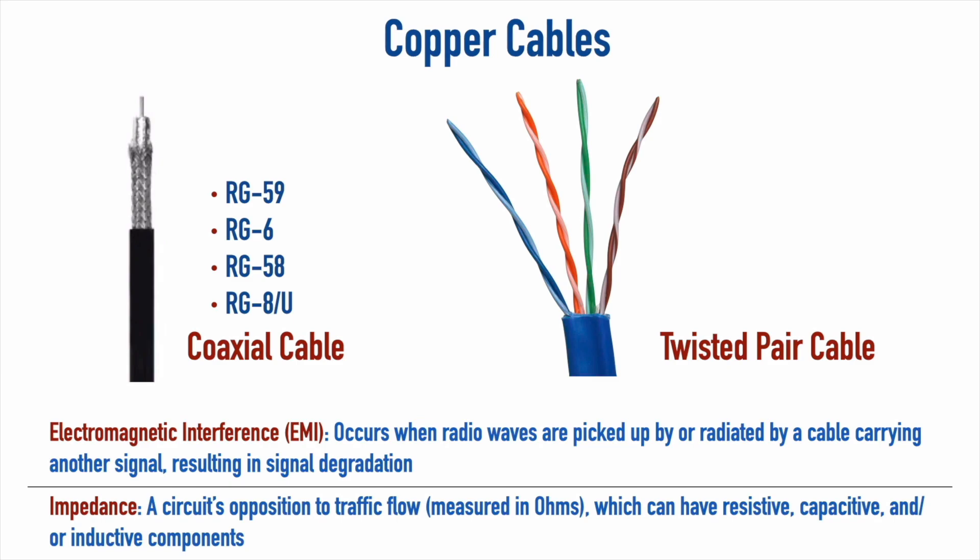Outside of data centers, we're typically going to see twisted pair cabling used in networks with distances less than 100 meters. You might wonder how we're protecting ourselves from EMI if there's no shielding. Some twisted pair cable does have shielding for higher-speed transmissions, but we also have unshielded twisted pair — UTP. With UTP, we prevent or reduce EMI by twisting pairs of wires together. Twisting the wires means copper crosses over copper at a distance less than one-fourth of the wavelength being transmitted, preventing the cable from acting as an antenna.